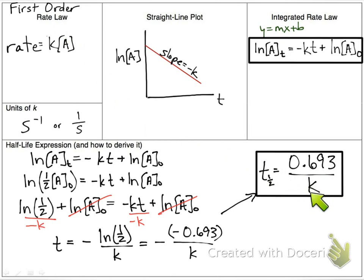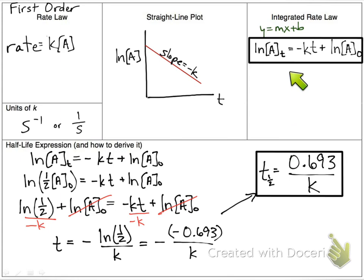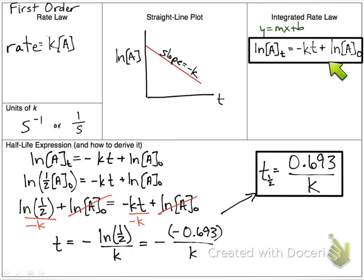The equations and constants sheet also gives you the first-order integrated rate law. You may need to use it in the free response section. It doesn't label it as first-order, so you need to know that the first-order integrated rate law is the one with the natural log in it.